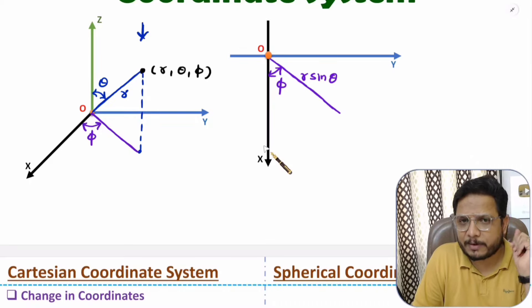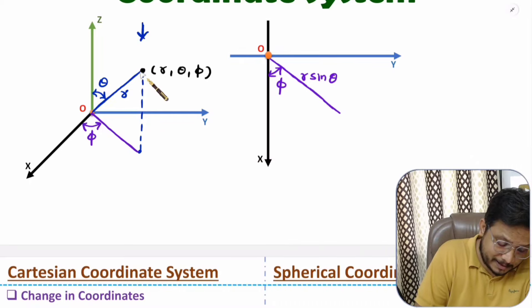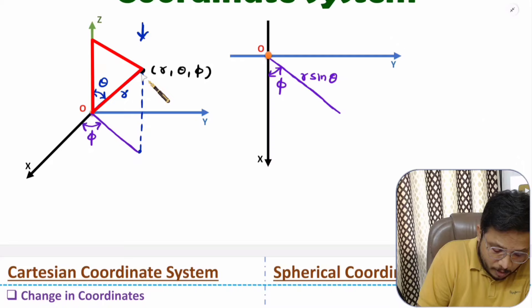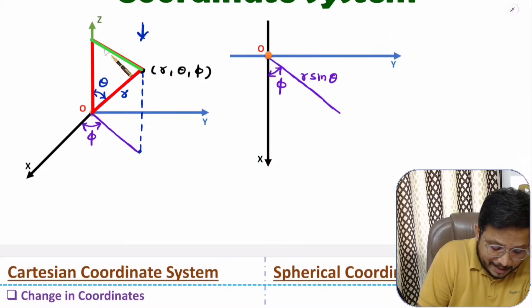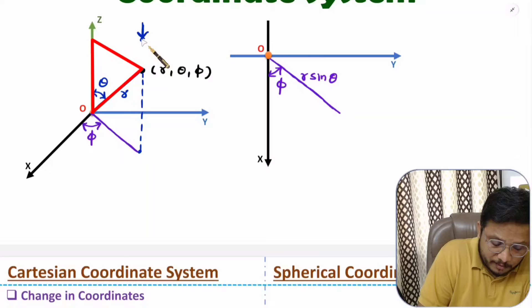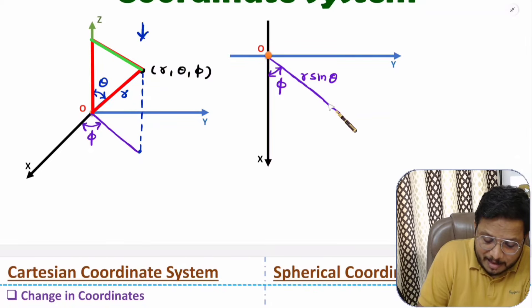Let me explain how that happens. This line has radius r. If you consider a triangle here, this angle is theta. The dimension of the opposite side is r sine theta, and that r sine theta is what you can view from the top view — that is this dimension.